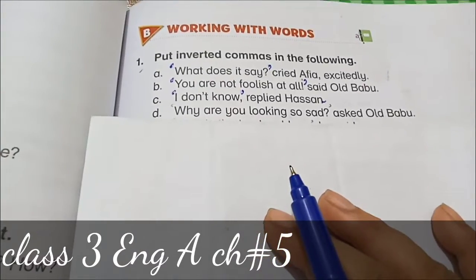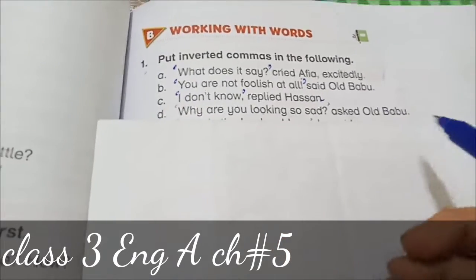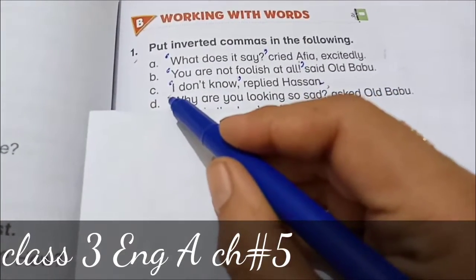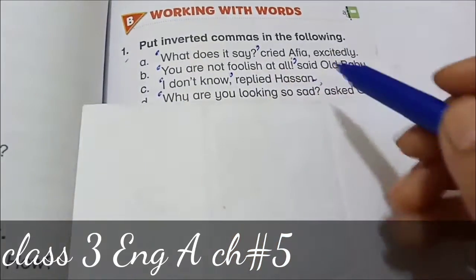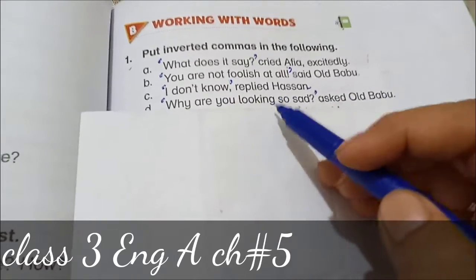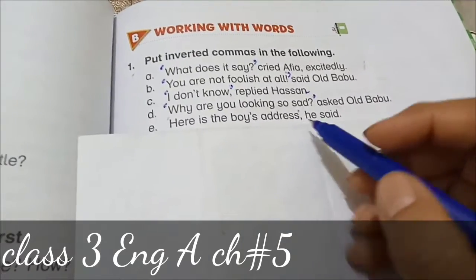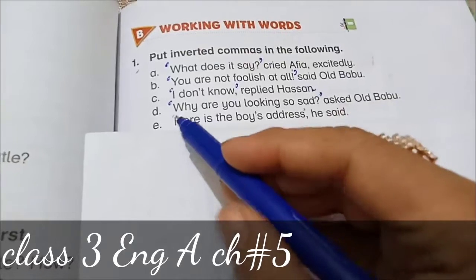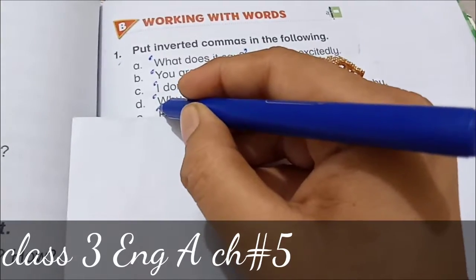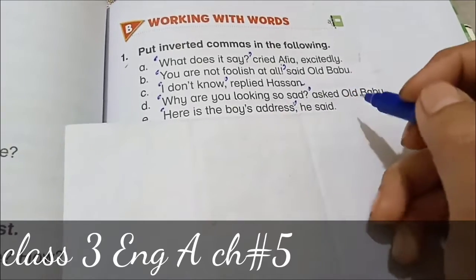Part D: 'Why are you looking so sad?' asked old Babu. This is the statement of old Babu and we are quoting as he has said, so we will put inverted commas before and after this question that old Babu said. Part E: 'Here is the boy's address,' he said. This is the statement — 'Here is the boy's address' — so we will put inverted commas before and after that.